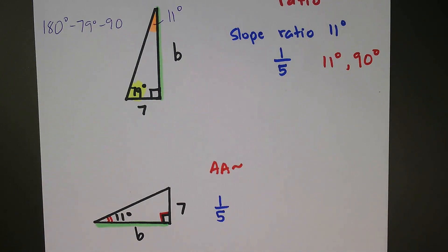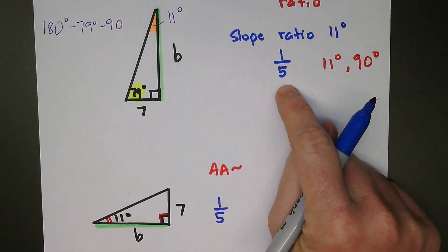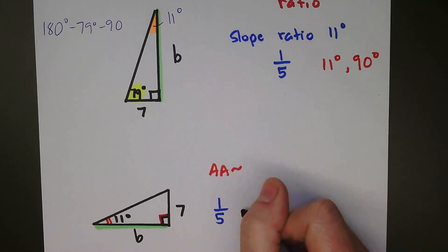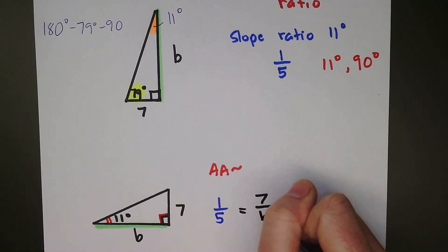Because they're similar, that means their ratios, their side lengths are proportional. So if I take the slope ratio for 11 degrees, 1 over 5, that's going to exactly equal the rise-over-run ratio from this triangle, which is 7 over B.